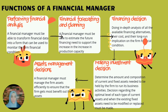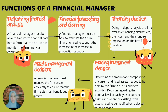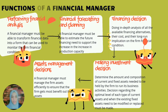Number four, making investment decisions. Determine the amount and composition of current and fixed assets needed to be held by the firm to run its business activity. Decisions regarding the optimal level of each type of current asset and when existing fixed assets need to be modified or replaced must be made. Number five, asset management decision. A financial manager must manage the firm's assets efficiently to ensure that the firm gets the most benefit out of its assets.